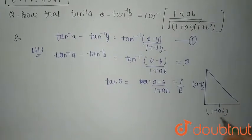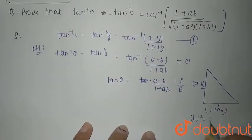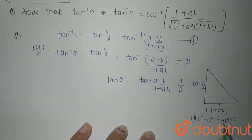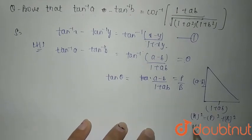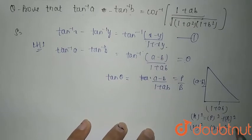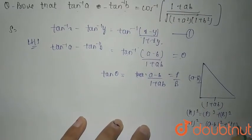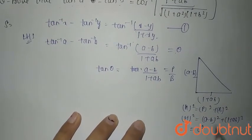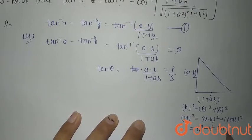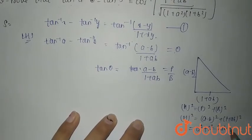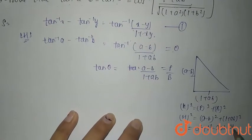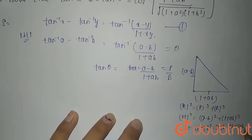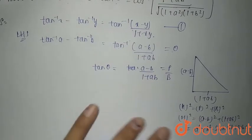By Pythagoras theorem, hypotenuse squared equals perpendicular squared plus base squared. So hypotenuse squared equals (a minus b) whole squared plus (1 plus ab) whole squared. Expanding: a squared plus b squared minus 2ab plus 1 plus 2ab plus a squared b squared.